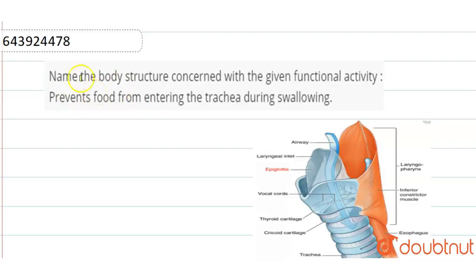Hello everyone, today we are going to discuss this question: Name the body structure concerned with the given functional activity which prevents food from entering the trachea during swallowing. Okay, let's come to the answer, epiglottis.